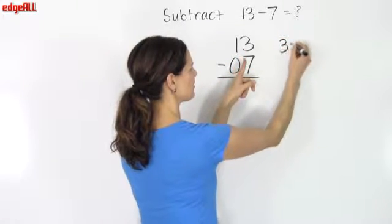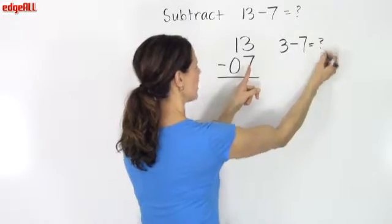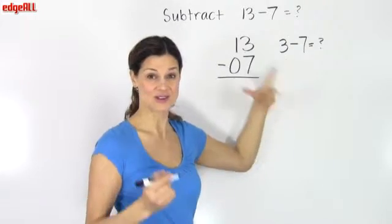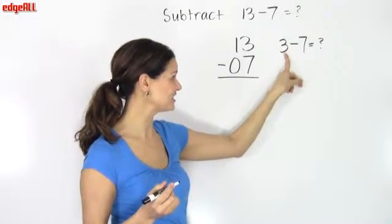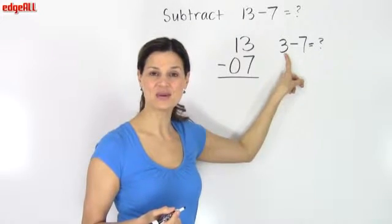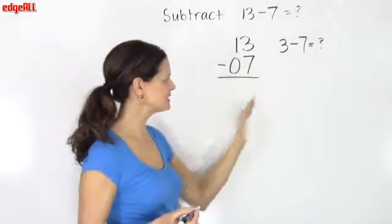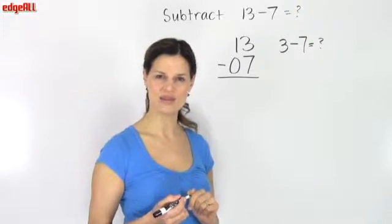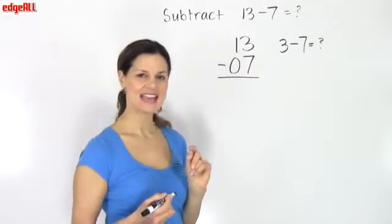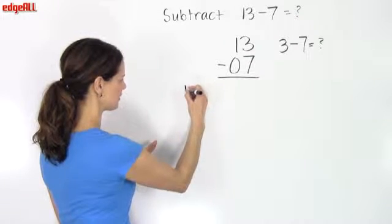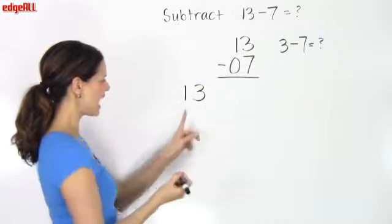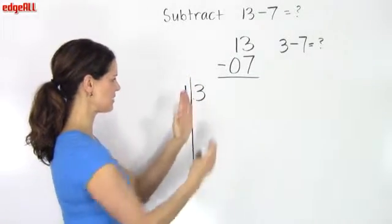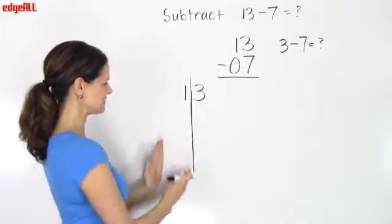So we look over here and we see that we have 3 minus 7. But our problem is that we can't take 7 away from 3. There's not enough. There's not enough numbers here to take 7 away. And we know that we can't put a negative number in our ones place in an answer like this. And so what we're going to do is we're going to work on some borrowing again. So let's look at our 13. And instead of just having it be the number 13, we're going to break it up a little bit. And so we're going to look at this 1 here. So I'm going to draw a little line between my 1 and my 3, representing that this is my ones column and that this is my tens column.